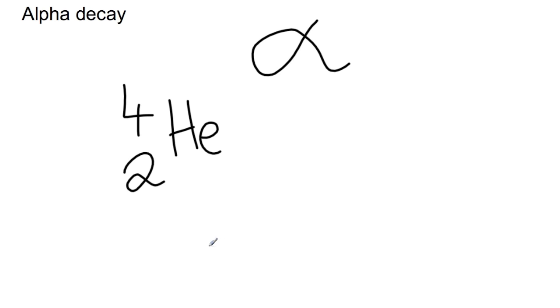So during alpha decay, the helium nucleus can be lost from the radioisotope nucleus. The nuclide notation here clearly shows what particles are being lost. So this is my preferred method.